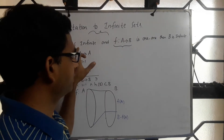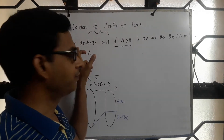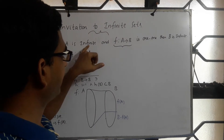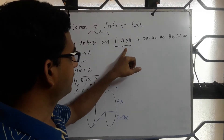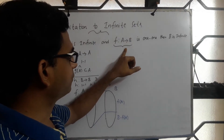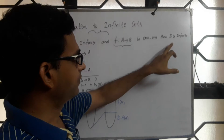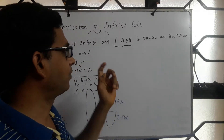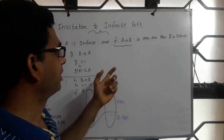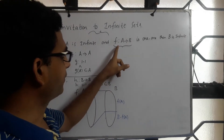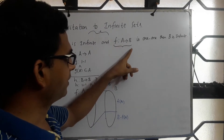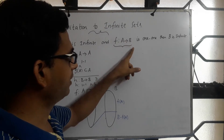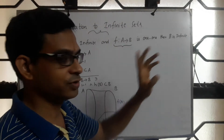We were discussing this proof: given a set A which is infinite and a function f from A to B is 1-to-1, we wish to show that B is also infinite. We already attempted one proof that says A is infinite, so f(A) is infinite, and since f(A) is a subset of B, the superset B is also infinite.